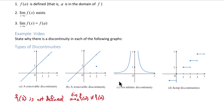In graph C, we have an infinite discontinuity. It looks like f of a is defined everywhere, but we have issues with the limits. Let's focus on 0. The limit as x approaches 0 of f of x is not the same as f of 0. As you approach 0 from the left and the right, the limit is heading to positive infinity, but f of 0 is defined to be 1. Since those values are different, we have a discontinuity.